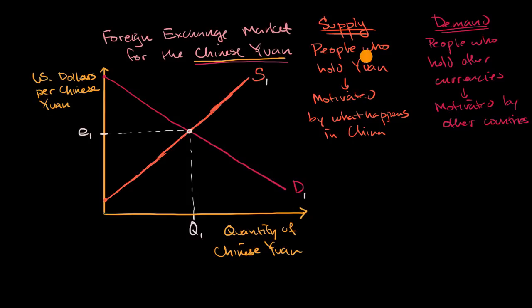And so for example, if we think about supply, what could shift the supply to the right, or increase supply? So shifting the supply means more Chinese want to sell their yuan. They want to convert it into something else, let's say US dollars.